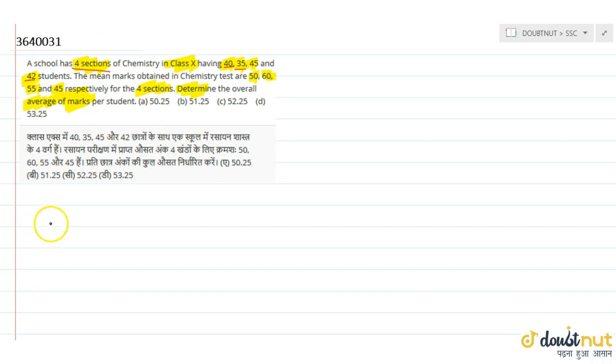The overall average will be total marks upon total students. Total students in all sections is 40 plus 35 plus 45 plus 42. These are total students. Now total marks.